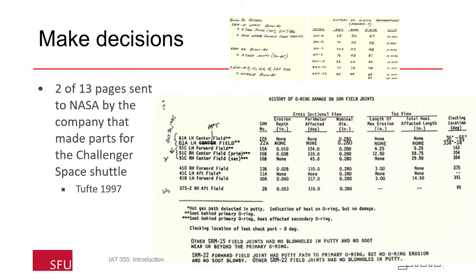Speaking of explaining, let's briefly go through a case study of the Challenger disaster. In January 1986, the space shuttle Challenger lifted off and exploded about a minute and a half into the launch. A presidential commission was put together to determine why this happened. What I'm showing here are two of the thirteen pages sent to NASA by the company that made parts for the Challenger space shuttle. As you can imagine, it's a little hard to understand — it has annotations, tables of numbers, and is generally difficult to parse.